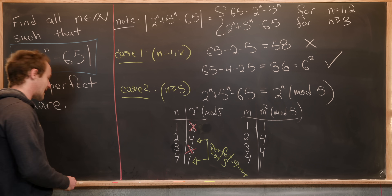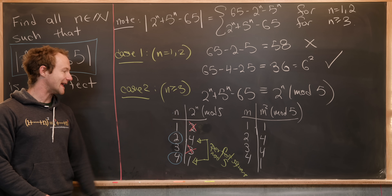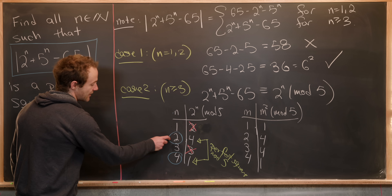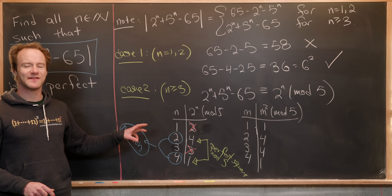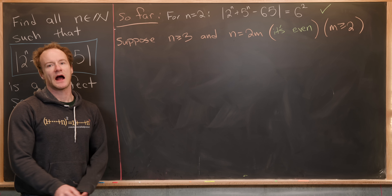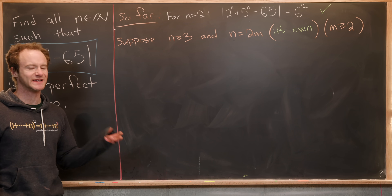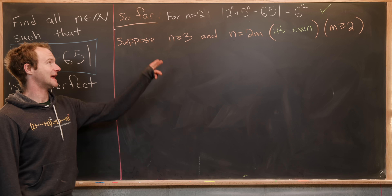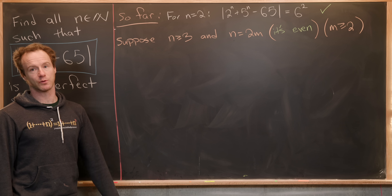This tells us that our n values must give 2 to the n congruent to 1 or 4 mod 5, which means n has to be 2 or 4, or more generally any even number. By Fermat's little theorem the pattern repeats, so in other words n must be even. On the last board we determined that n equals 2 gives 6 squared as a solution. Now we suppose n is greater than or equal to 3 and n equals 2 times m — in other words, n is even.